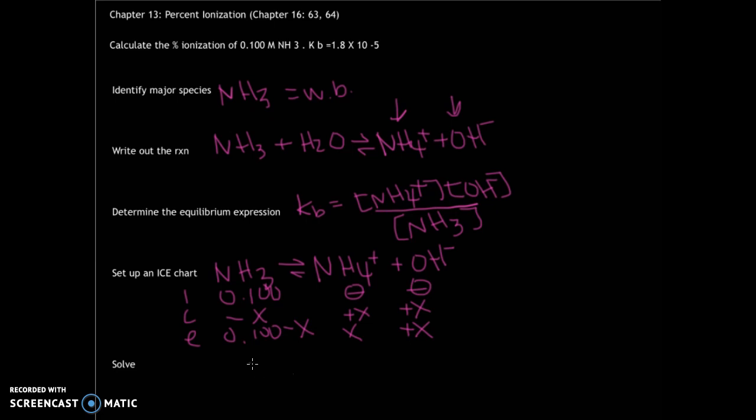Okay, you set up your equilibrium expression. I nicely in this one gave you KB. And since ammonia is a base, I can straight plug that K in. K equals, okay, x squared products, right?